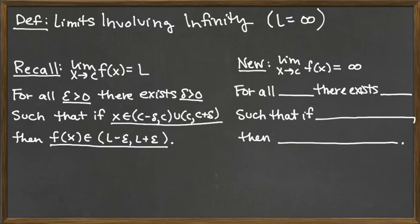We have just learned the formal definition of a limit where x is going to c of f of x equals L, but we're not restricted to formal definitions of limits with c and L both being numbers. We're going to expand this formal definition to what it would look like if L equals infinity, if c equals infinity, or if perhaps both were equal to infinity. We can even do this with negative infinity in any place as well.